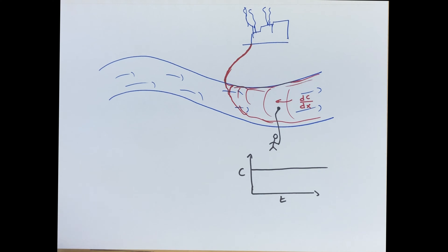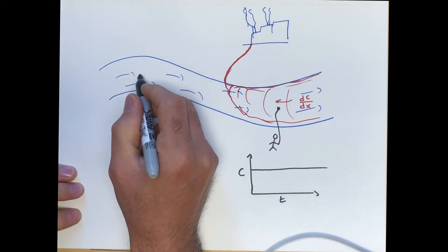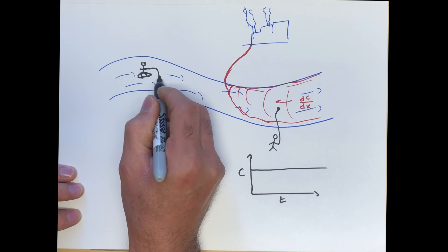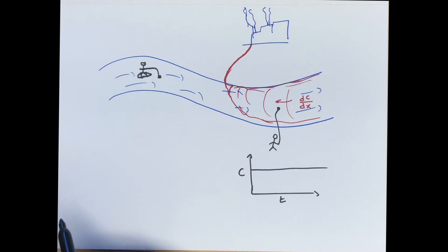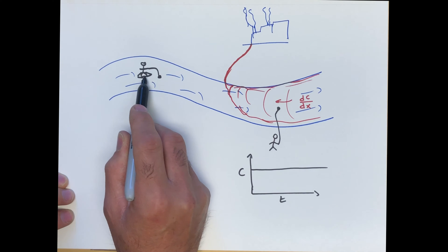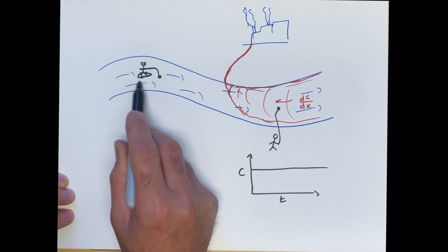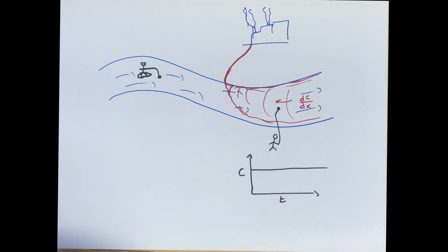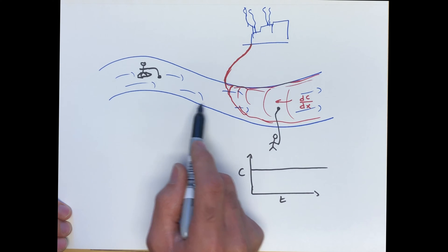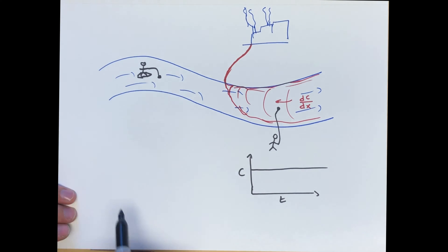Now let's say you send in another graduate student who is going to take a boat — they're on a low canoe. They're going to throw in the same probe to measure concentration. As they go through the river, they're following the same velocity of the river. However, as they approach the region of concentration, they're going to start measuring concentration, but upstream they're not going to measure anything.